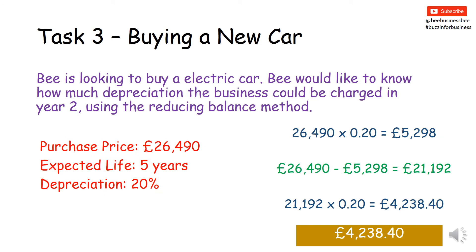So there is your answer. Firstly you will need to work out the £26,490 purchase price multiplied by the 20%, which gives you £5,298. You then, because we're doing the reducing balance method, need to subtract that amount of depreciation from the original value of the asset, which was £26,490. That gives the asset a value of £21,192 — the value of the asset at the end of year one going into year two. You then take the value of the asset at the start of year two, £21,192, multiply it by the 20%, and you find £4,238.40. That is the amount of money you would apportion to the cost for depreciation in year two.